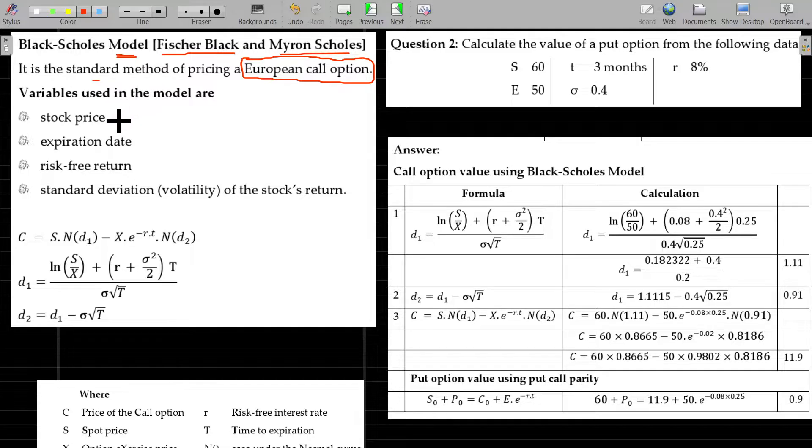We have some variables here to be applied. Call option value is equivalent to spot rate into normal distribution of D1 area, minus present value of exercise price, present value of exercise price. E to the power RT represents exercise price, and the second area in the normal distribution ND2 will be taken.